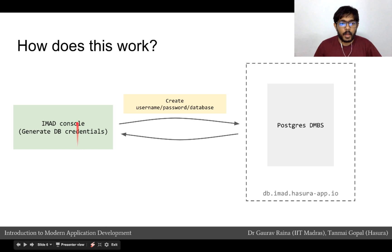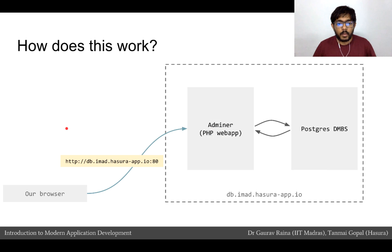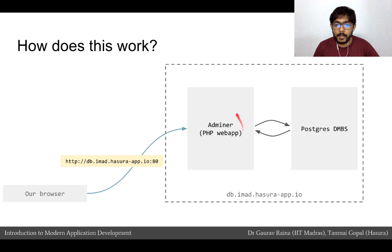Let us understand how all of what we did works. When we went to the IMAT console and clicked on 'Generate DB credentials', what actually happened is that there was a DBMS sitting on the db.imat.hustrap.io server. On this machine there was a Postgres DBMS. The IMAT console contacted this DBMS and ran operations to create the username, the password, and the database. Once these were successfully created, this data was taken back by the IMAT console and displayed to us on the UI. Once we went to the link db.imat.hustrap.io — the link we got when we clicked on 'Generate DB credentials' — our browser opened up another web app: the Adminer web app, which is a PHP web app and is what I call the DBMS console.